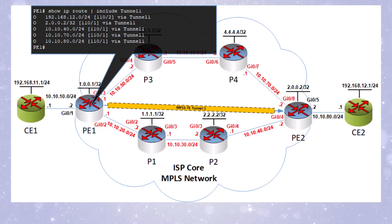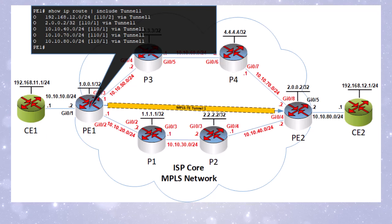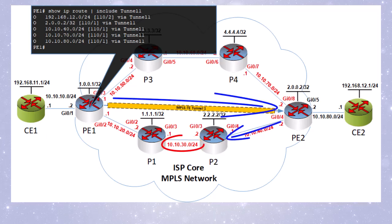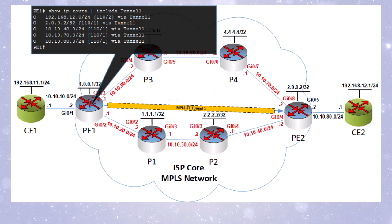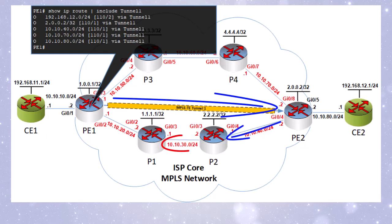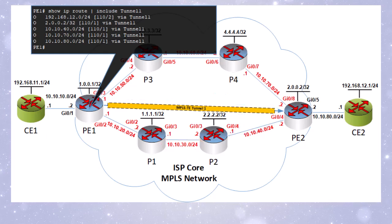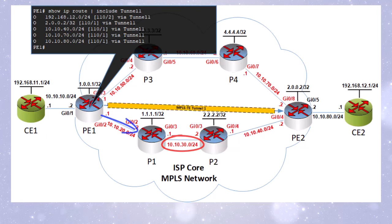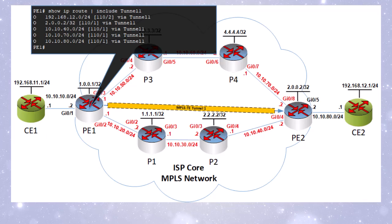Now, which routes will actually use the tunnel interface and which will not? For example, why not route the 10.10.30.0 network via the tunnel and then back? Well, OSPF lowest-metric rules still apply. If you look at the metric going via the tunnel — 1, 2, then 3 — while going via P1 gives a metric of 2, so that path is preferable. We still use OSPF metric rules to determine which routes actually get into the routing table.